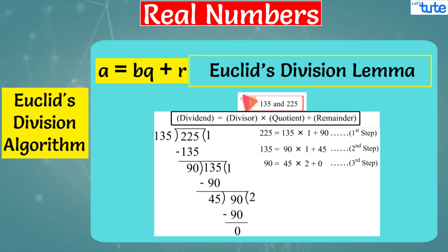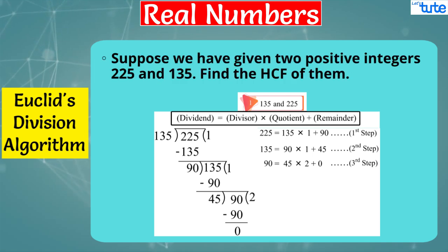Now let's try to understand Euclid's division algorithm with the help of a given example. Suppose we have given two positive integers 225 and 135, and we have to find the HCF of them. Now in the last step, we can see that the remainder has become 0, so our steps stop. Since the divisor at this stage is 45, the HCF of 225 and 135 is 45. We will give each step name such as step 1, 2, and so on, and this procedure is called Euclid's division algorithm.